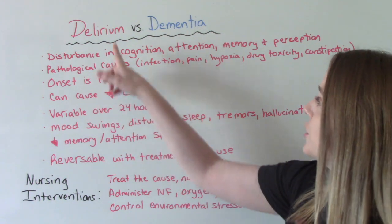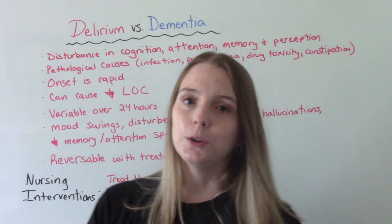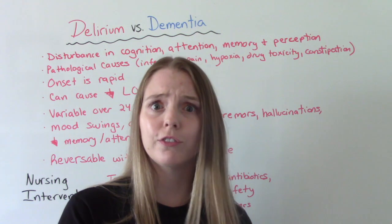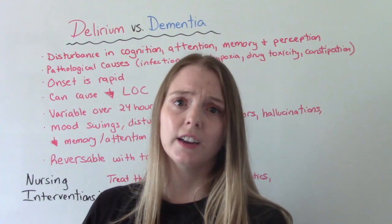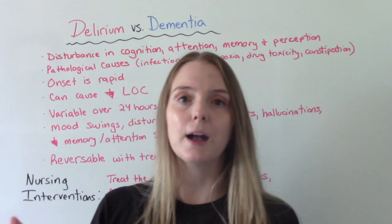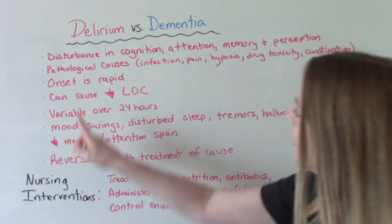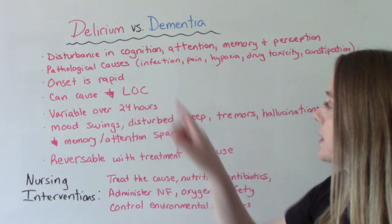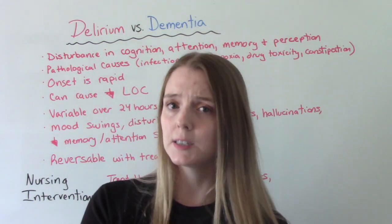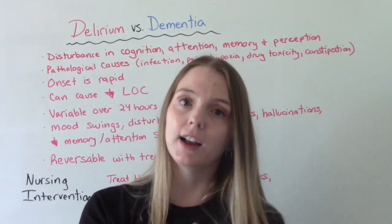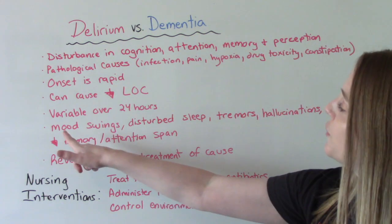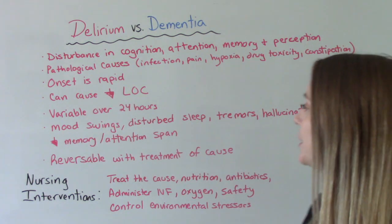The onset for delirium is rapid. You took care of your patient yesterday and they were completely normal. Now this morning you're taking care of them and they're a completely different person. It can cause a decreased level of consciousness — it doesn't always — but it is possible that your patient could become unconscious or drowsy. It is variable over a 24-hour period.